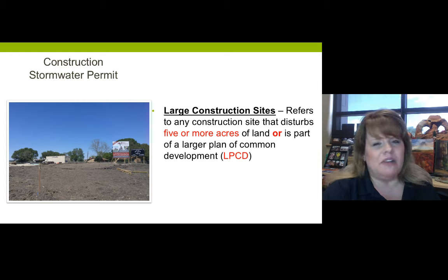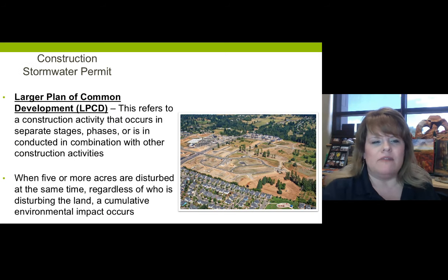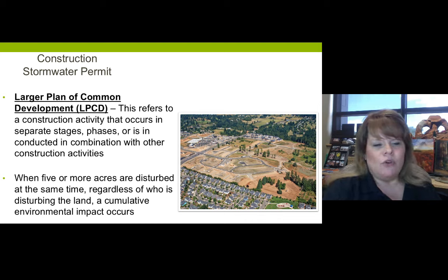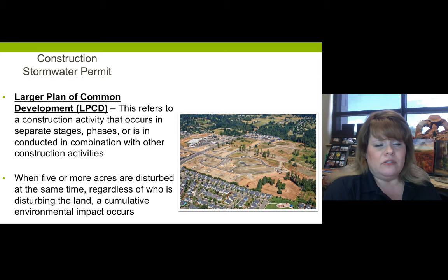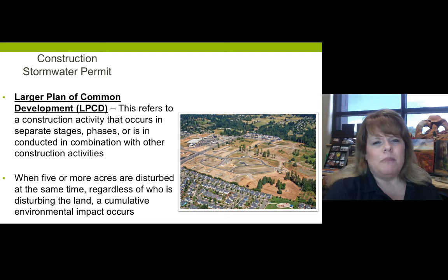That larger plan of common development basically means it's like a subdivision or a retail area — something that has planned building, is zoned for that area, and is happening all at once. So an LPCD, known as a larger plan of common development, refers to construction activity that occurs in separate stages or phases, or is conducted in combination with other construction activities simultaneously. Basically, you've got construction going on and it's disturbing five or more acres consecutively, even if each individual plot of land, like in a homeowner situation, is like a quarter of an acre in size.